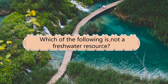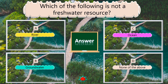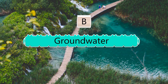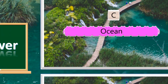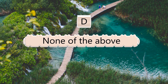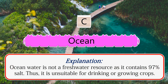Which of the following is not a freshwater resource? Options: river, groundwater, ocean, none of the above. The answer is ocean.